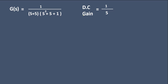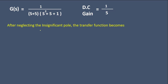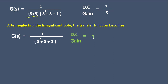After finding the DC gain of the original transfer function as 1/5, we remove the insignificant pole, giving the approximated transfer function 1 / (s² + s + 1). But substituting s = 0 in this approximated function gives a DC gain of 1, since 1/(0 + 0 + 1) = 1. The DC gain of the original transfer function is 1/5, and we cannot change it.